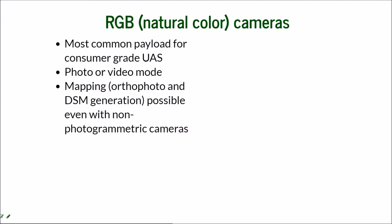Photogrammetry means that it is possible to make measurements on the results of the processing. Before, aerial imagery was used to produce maps for a couple of decades. But in order to make a map out of a photo, you needed a special photogrammetry camera. It needed to be calibrated — it was expensive, it was an investment, and it was not a consumer-grade camera.